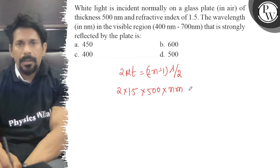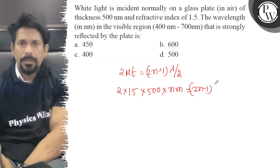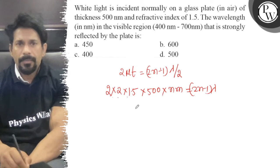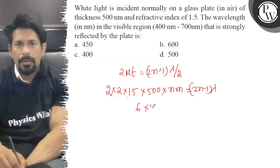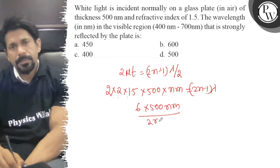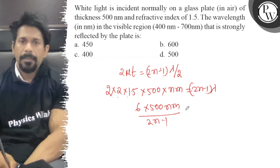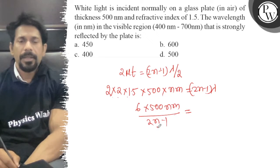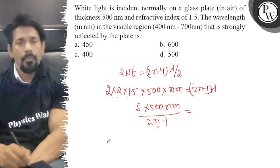And that is equal to 2n minus 1 into lambda by 2. So this is equal to 1.5 times 500 nm upon 2n minus 1. Now let's see if we can vary the value of n and write the value of lambda.